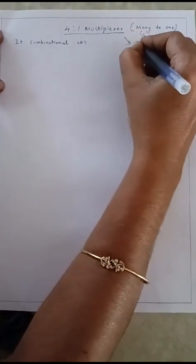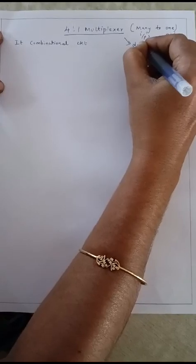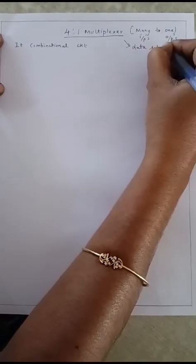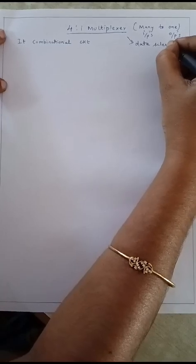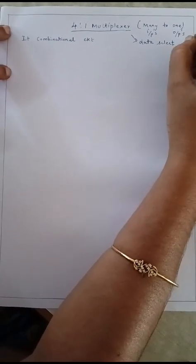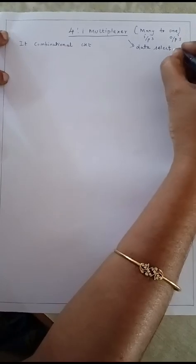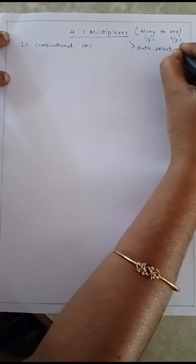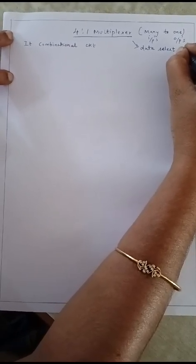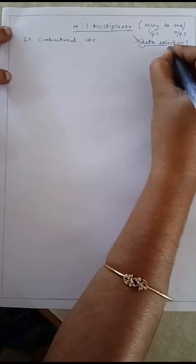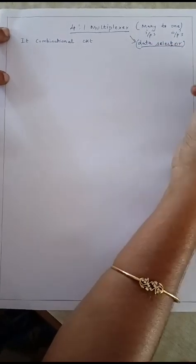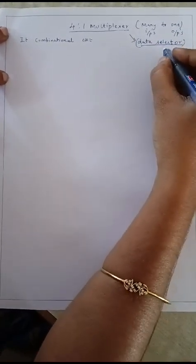The data can be selected as an output based on the selection line input, and the output is produced by the multiplexer. This device or circuit is called a multiplexer. The other name for a multiplexer is data selector, because the selection line determines which input is passed to the output.